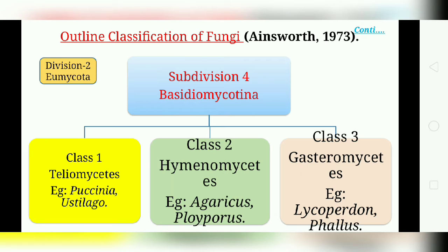Basidiomycotina is further divided into 3 classes: Teliomycetes, Hymenomycetes, and Gasteromycetes. The first class, Teliomycetes, are the parasitic ones — rust or smut. The basidiocarpe is absent in this class. Examples include Puccinia and Ustilago.